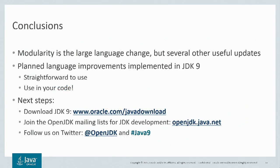In conclusion, modularity is the large language change coming in JDK 9, but there are many other useful updates. We went through planned language improvements to the language changes previously made in JDK 7 and 8 — these are very straightforward to use, and you can use them in your own code today. To start using them, you can download a version of the JDK for your platform. If you're interested in getting involved in the development of OpenJDK, you can look at the mailing lists on the OpenJDK website, and get updates by following OpenJDK on Twitter.